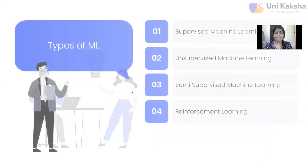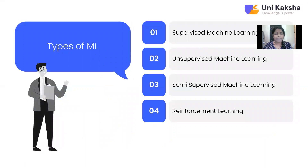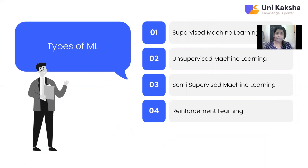Let us understand machine learning in a bit more depth so we can clearly move ahead with the concept of linear regression. There are basically four types of machine learning algorithms. The first type is supervised machine learning, where we are given input as well as output variables and we have to find out the relation between those input and output variables — meaning we need to find a function that derives the given output provided the given input variables.